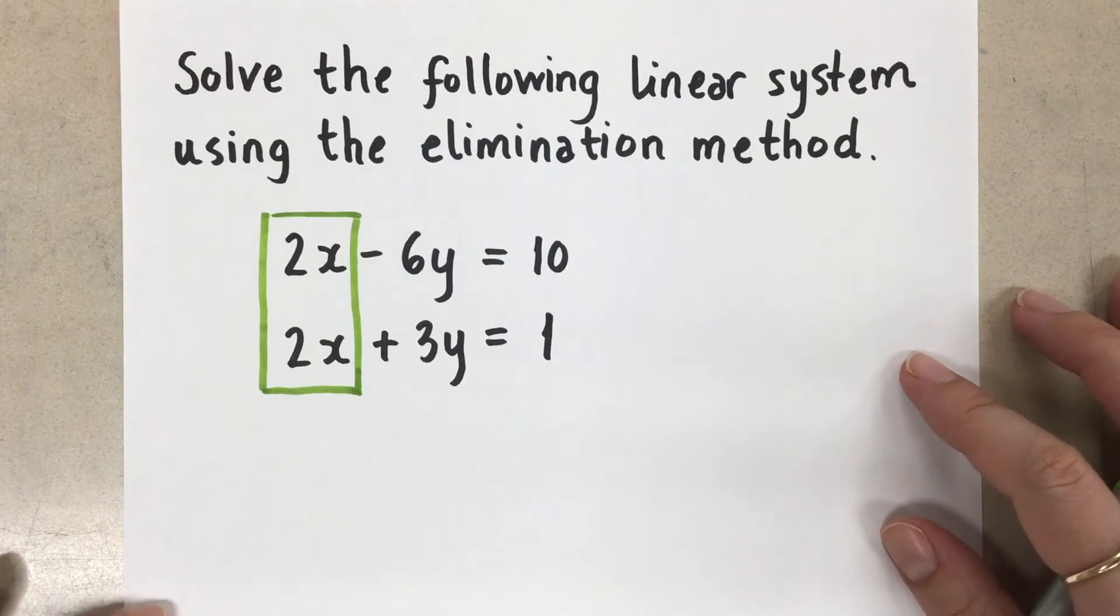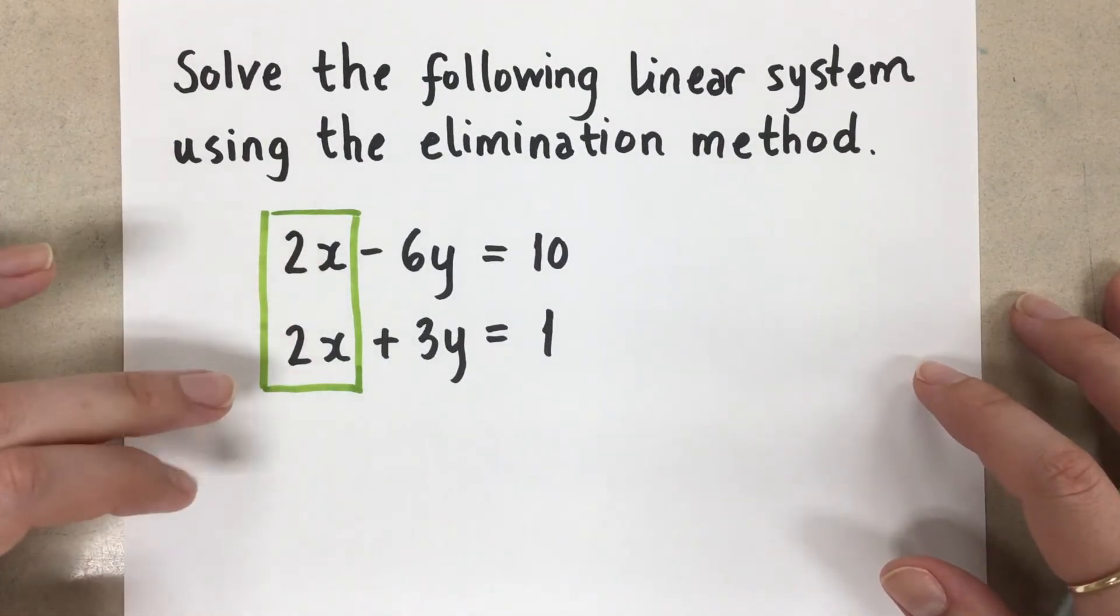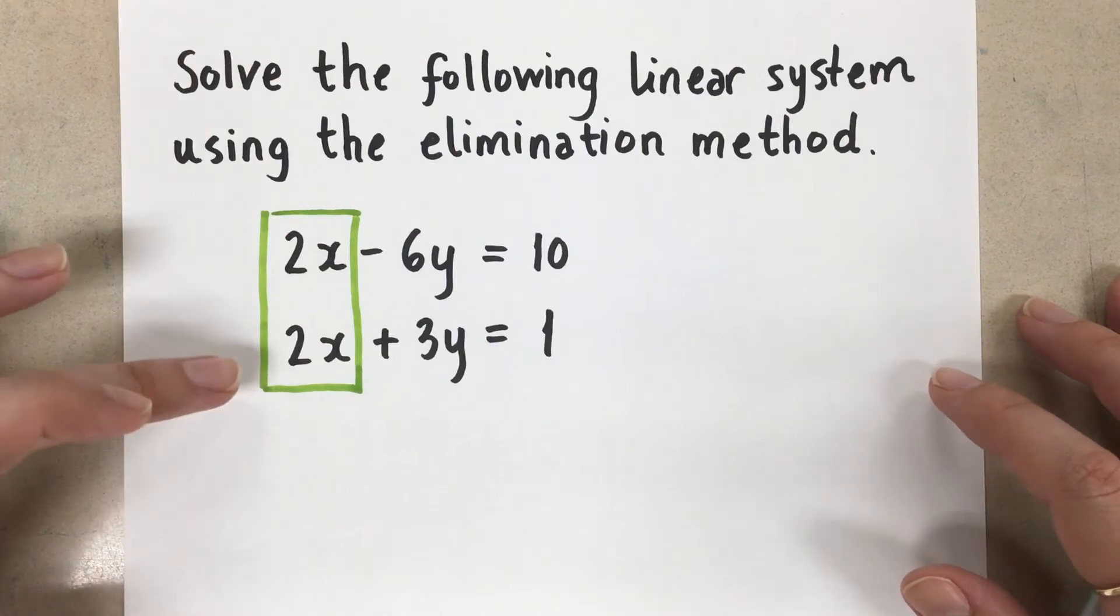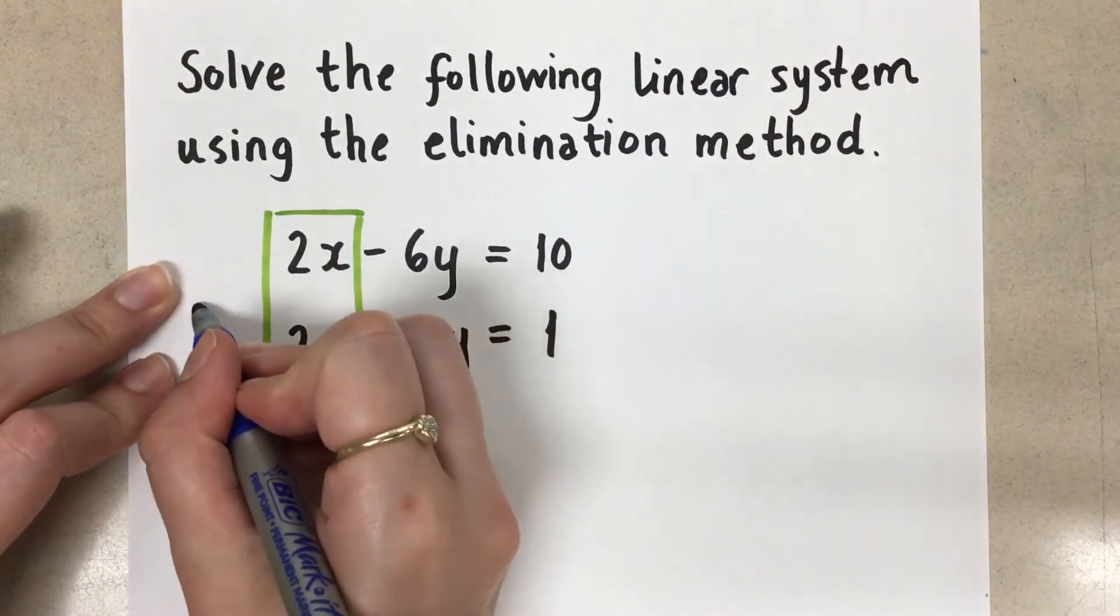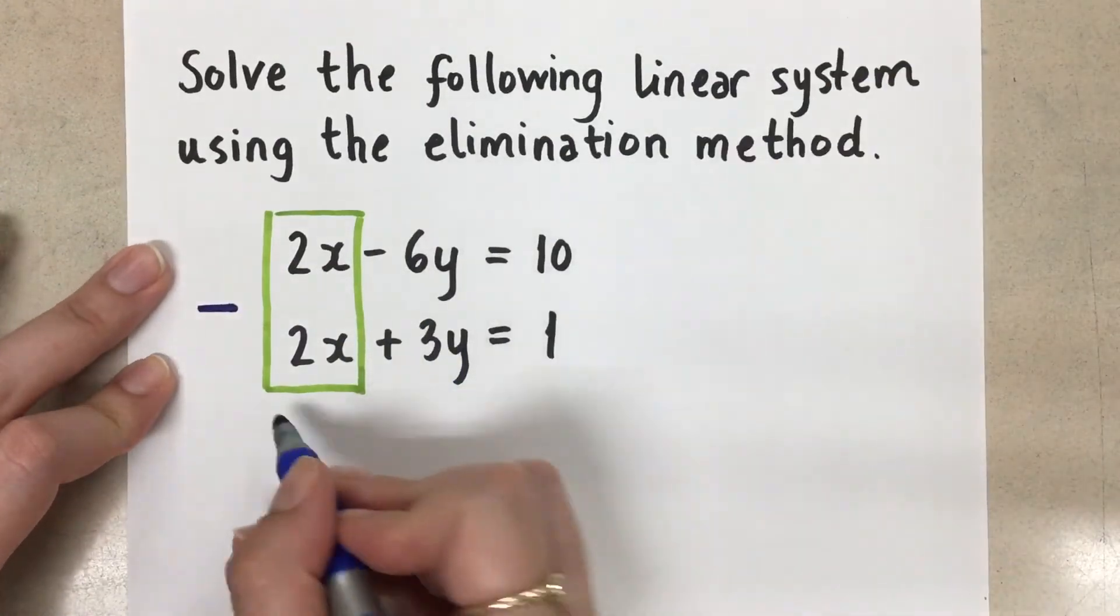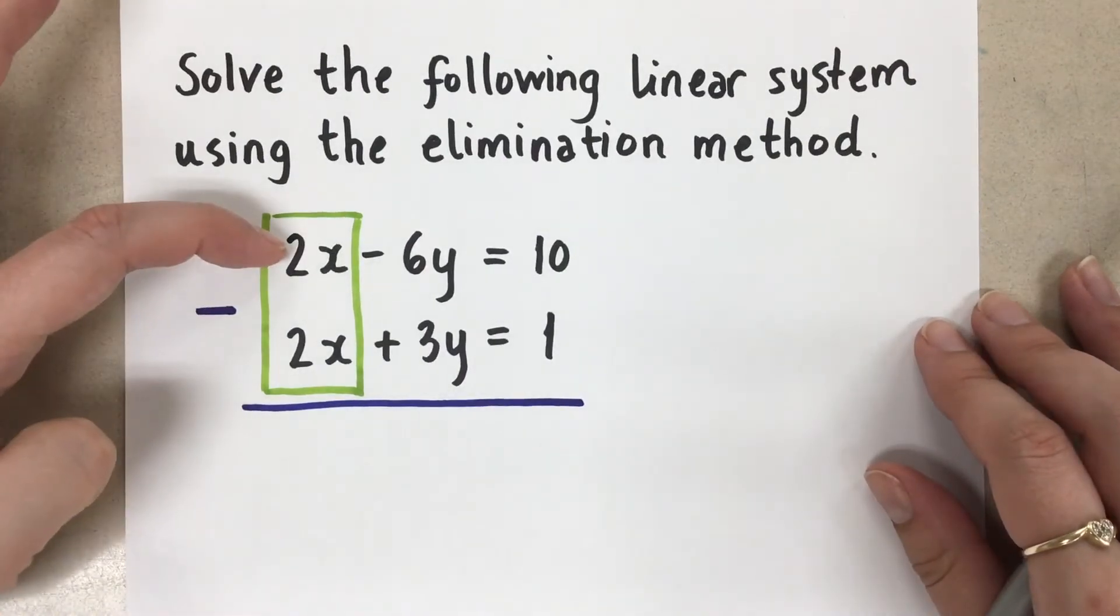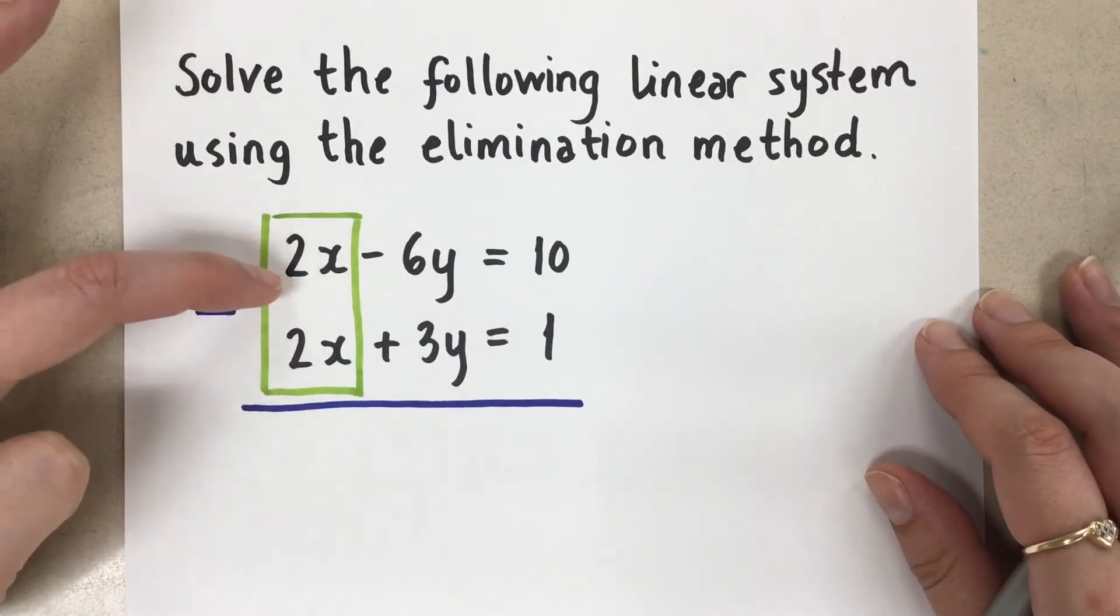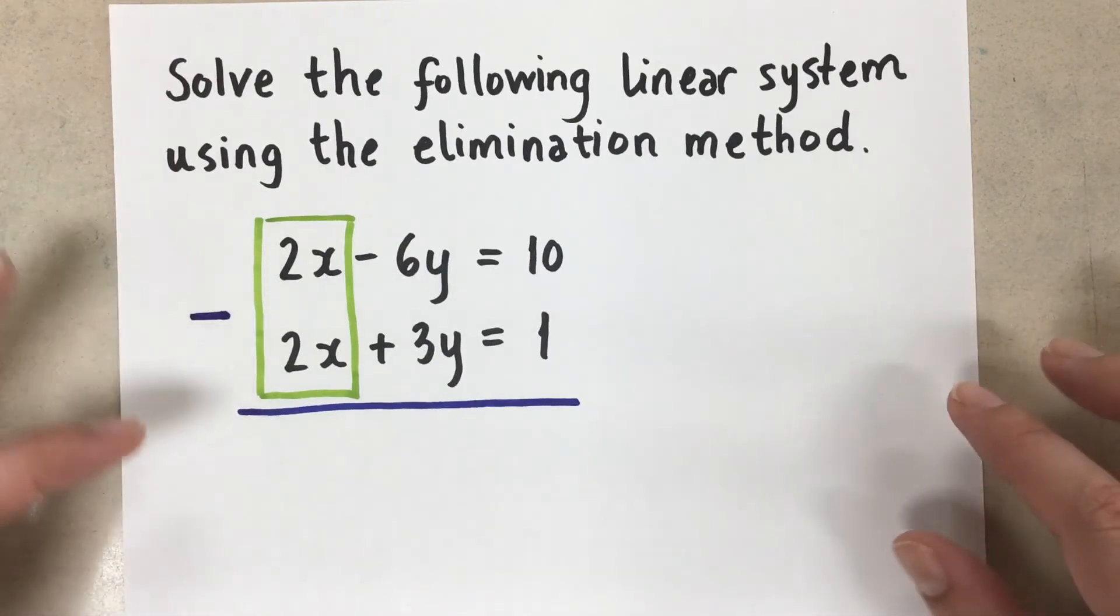In other words, we want to make that equal to zero. In order for these two terms to equal zero, I have to subtract them. So we're going to subtract these two equations in order to eliminate the x terms. Now, if one coefficient was positive and one was negative, then you would have to add them together in order to eliminate. So sometimes that happens also.